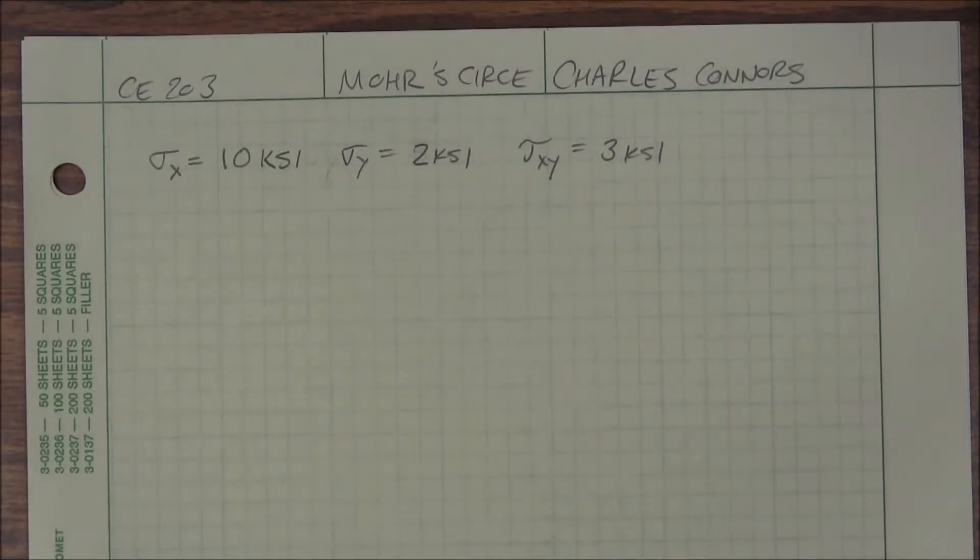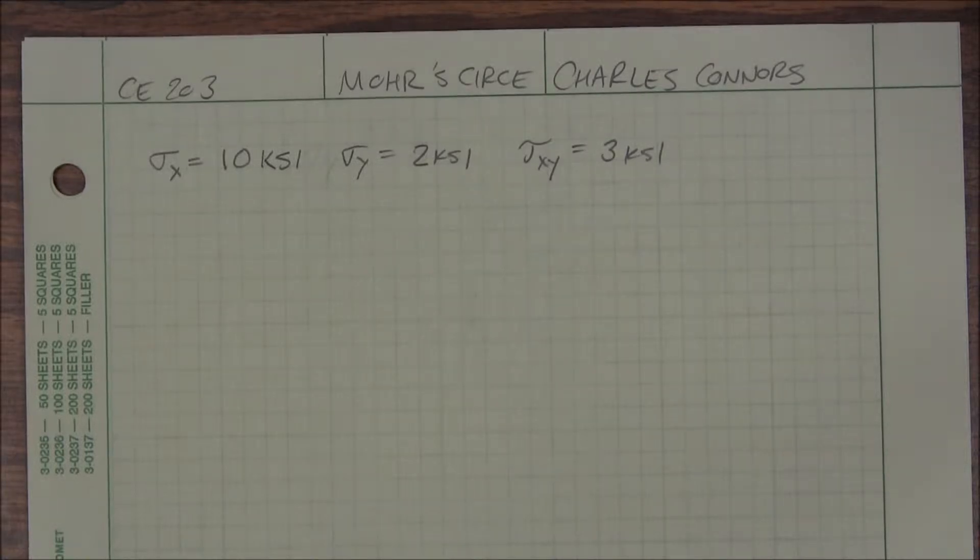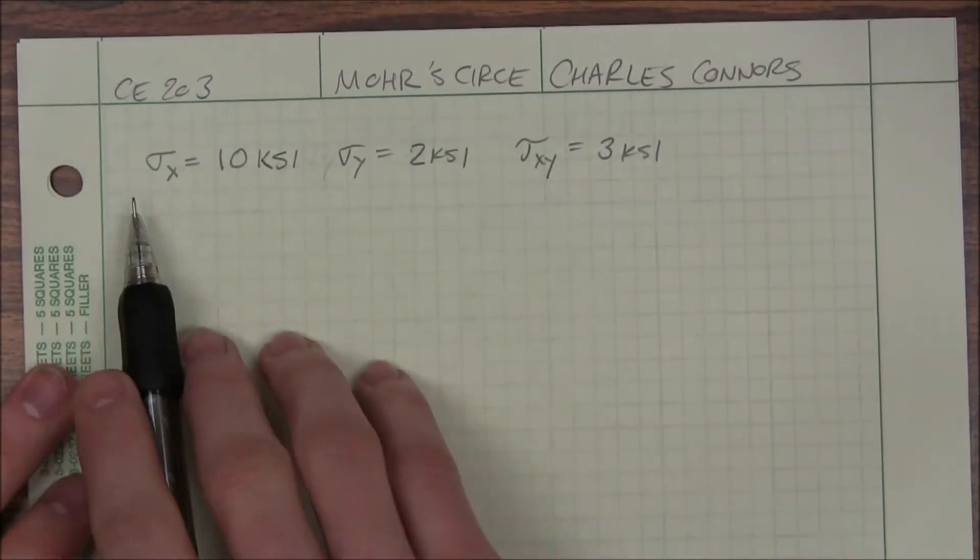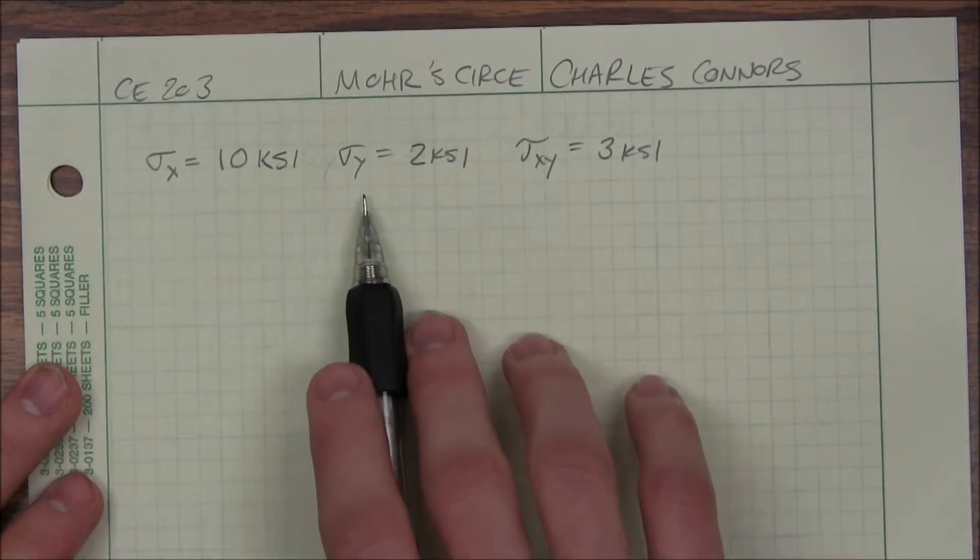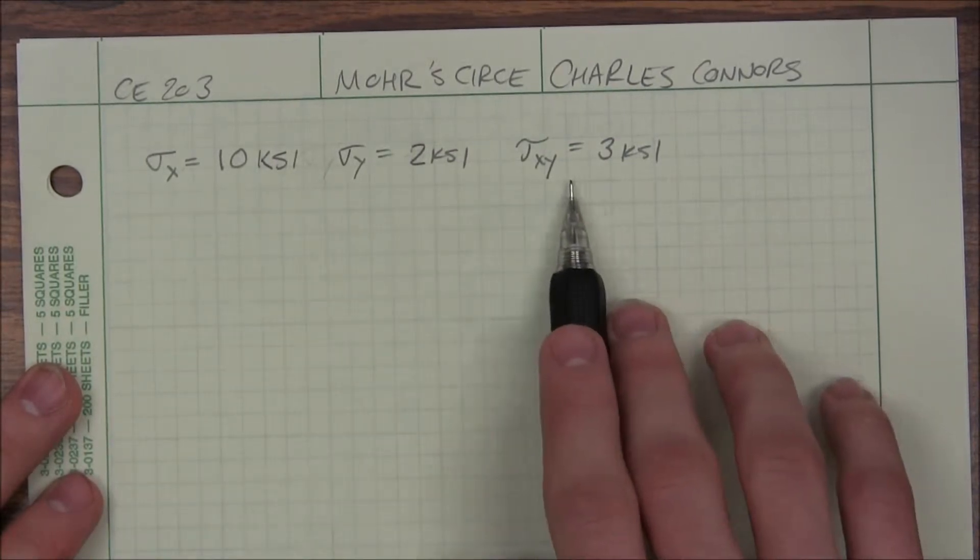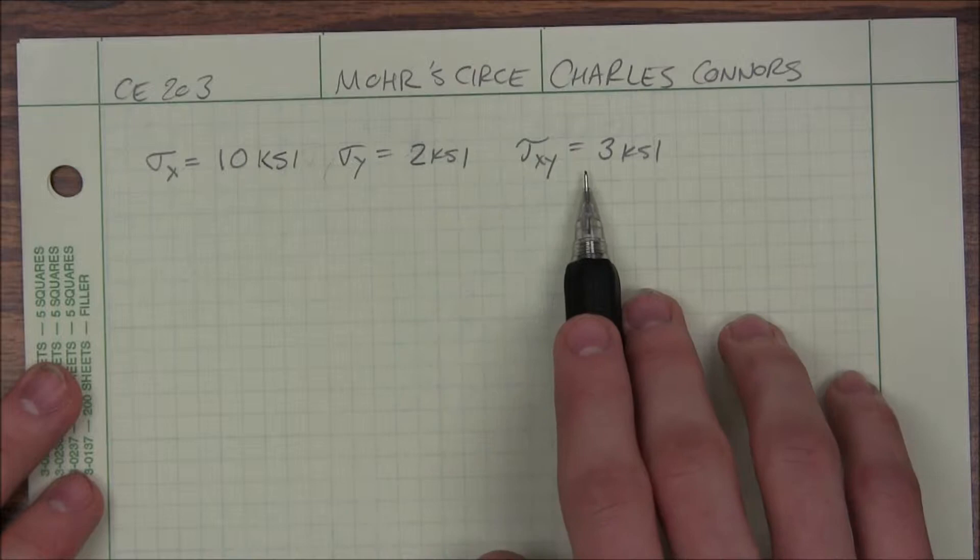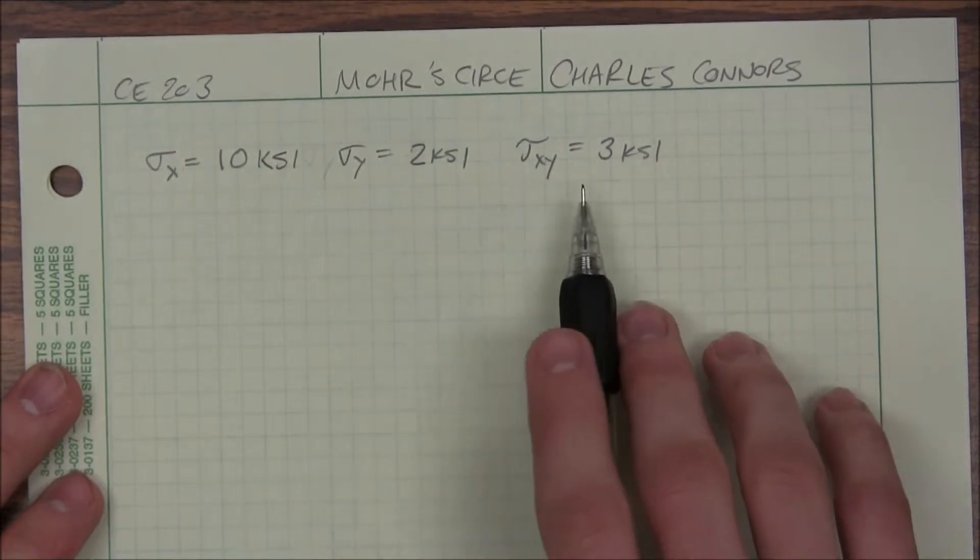Here's a little more circle review. We're going to talk about plotting the points, our initial points. No math, just the points. So first I'm given 10 KSI in the X direction, 2 KSI in the Y direction, and 3 KSI for my shear stress.